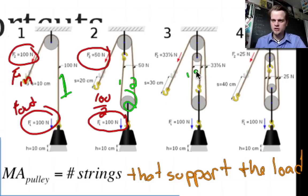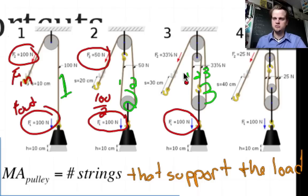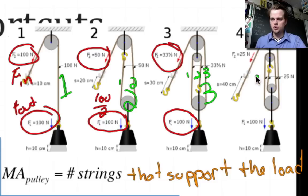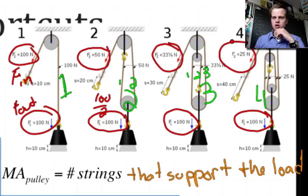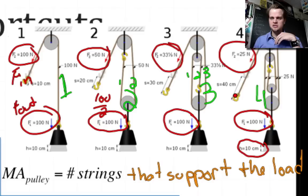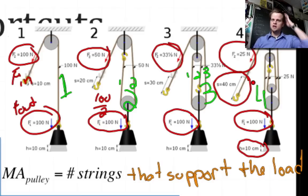With three strings supporting the load, you get a mechanical advantage of three — 100 newton output with only about 33.5 newtons of input force. With four strings, you get 100 newtons out from just 25 newtons in — mechanical advantage of four. The trade-off is distance: if the load moves up 10 centimeters, you have to pull the string 40 centimeters. The extra force comes at the cost of distance, but it's a good trade-off.